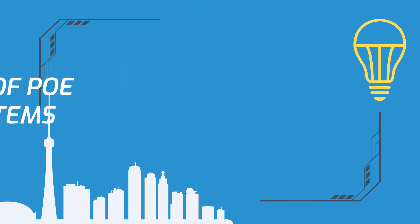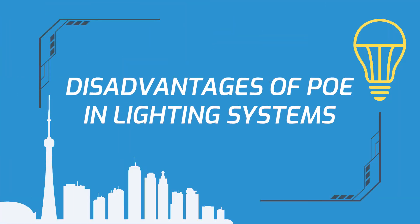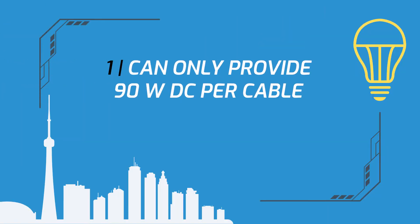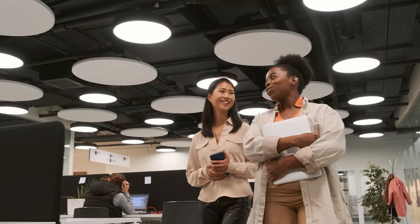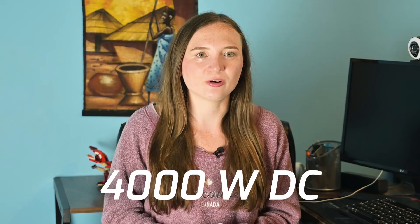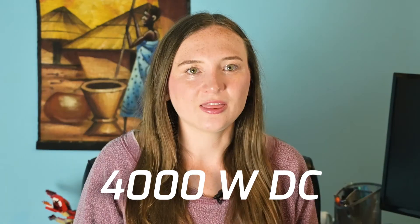Now let's dive into the main disadvantages of PoE. Type 4 PoE systems can only provide 90 watts per cable. So for a 25,000 square foot commercial office space, for example, about 4,000 watts would be needed to power lighting. In this case, dozens of PoE cables would need to be bundled together to provide enough power to the lighting, which increases the cost and complexity of installing PoE.